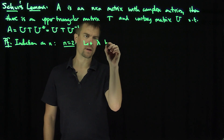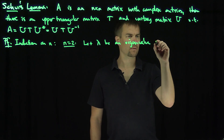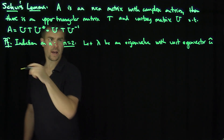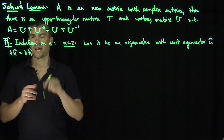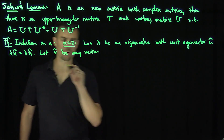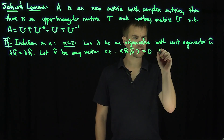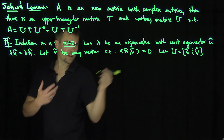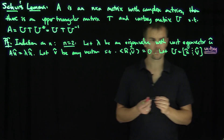Let lambda be an eigenvalue with unit eigenvector u-hat. That means A applied to u-hat equals lambda u-hat by the definition of eigenvalue and eigenvector. Then I'm going to let v-hat be any unit vector such that the inner product of u-hat and v-hat equals zero. We let U be the matrix [u-hat, v-hat], and this matrix U is a unitary matrix.